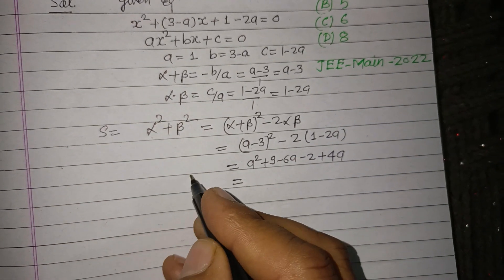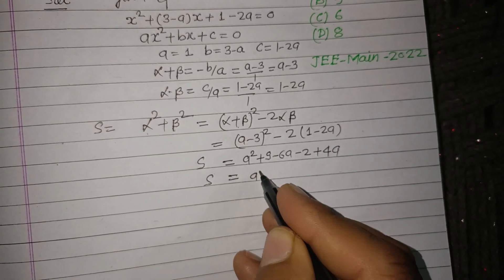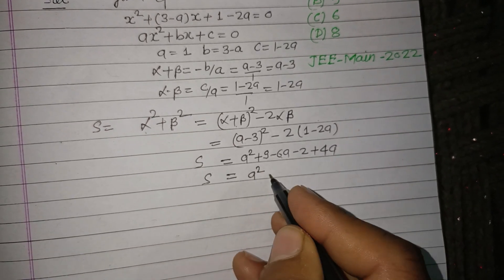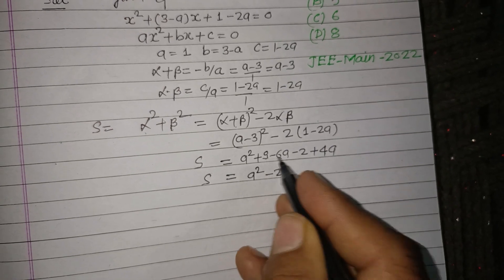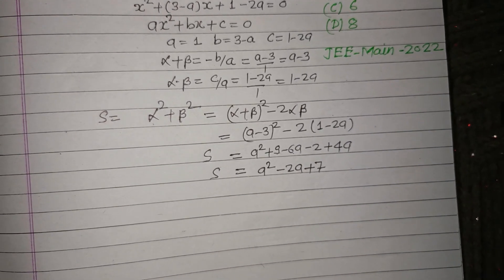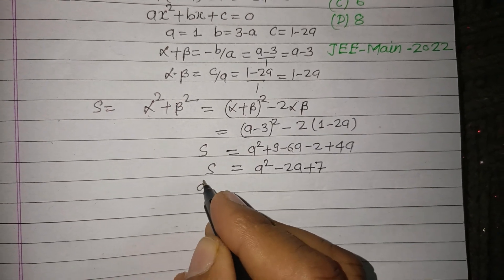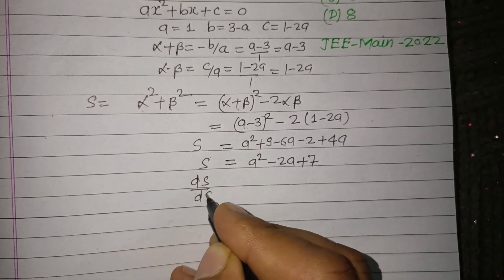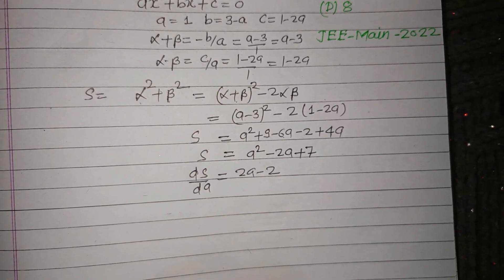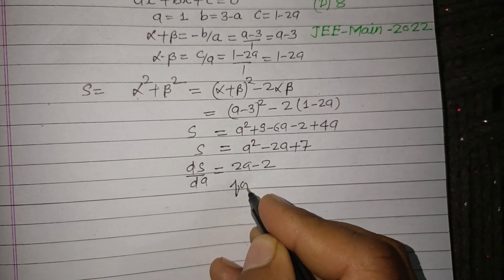So S = a² - 6a + 4a + 9 - 2 = a² - 2a + 7. Now differentiating S with respect to a: dS/da = 2a - 2.